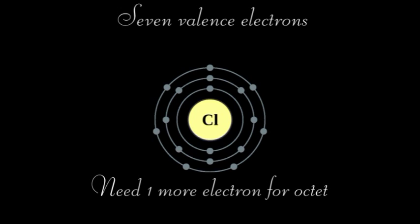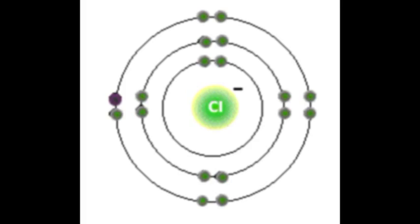Seven electrons were in their valence, and they wanted eight.